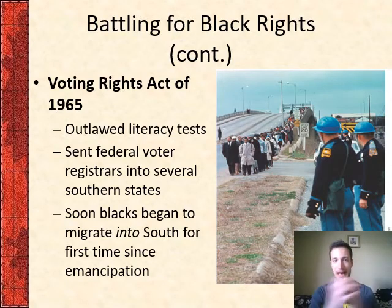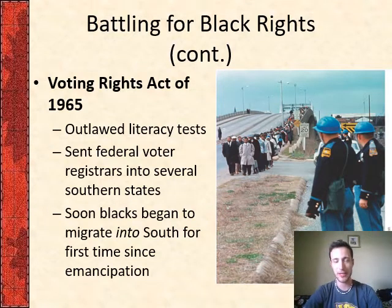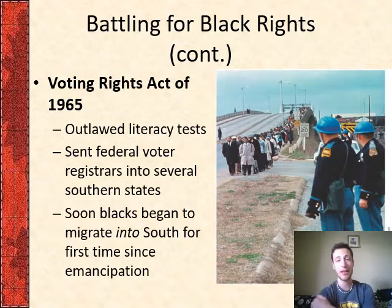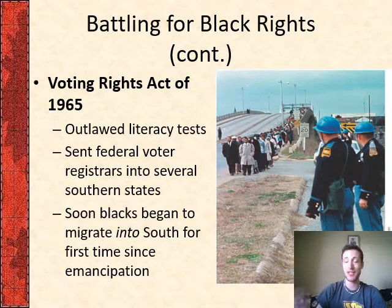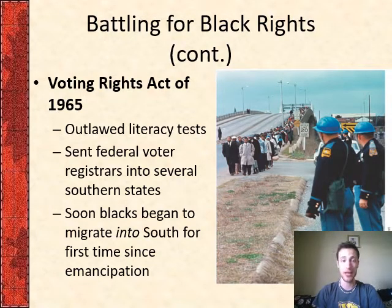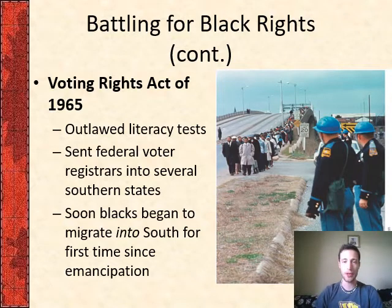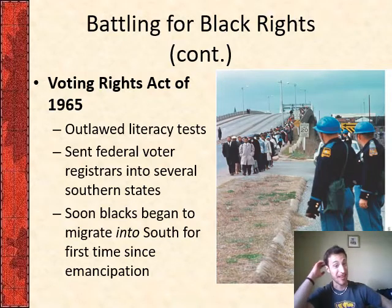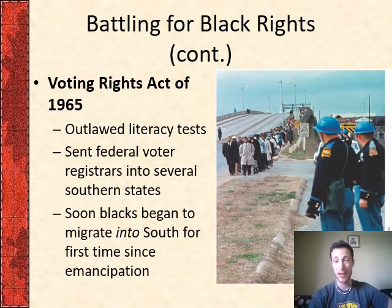This direct action and working with the federal government led to the Voting Rights Act of 1965, which first said you cannot have literacy tests as a requirement for voting. The other provision — probably a bigger deal — sent federal registrars into several states to oversee elections. No longer could discriminating states run their own elections without federal oversight, which allowed people to actually register to vote and not be as worried about facing intimidation. Soon, blacks began to migrate into the South for better opportunities for the first time since the emancipation of slaves.